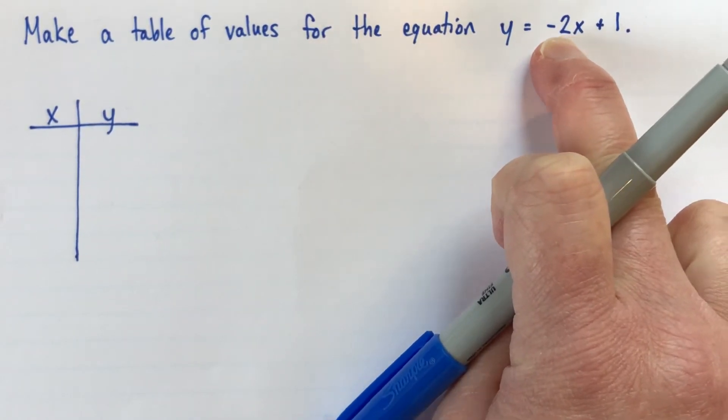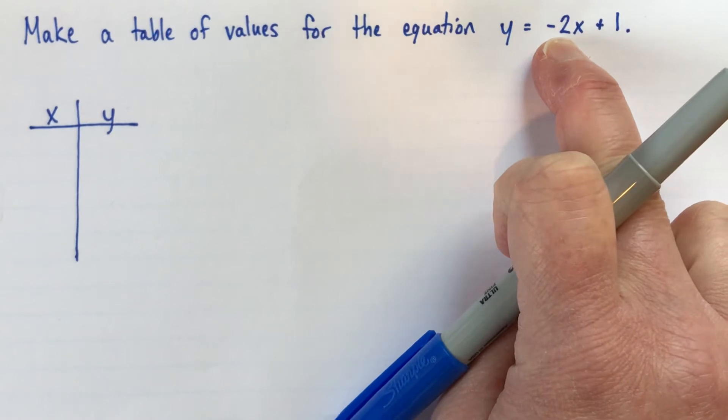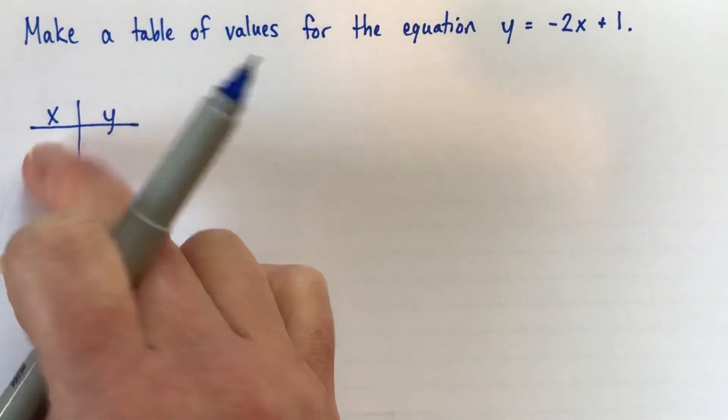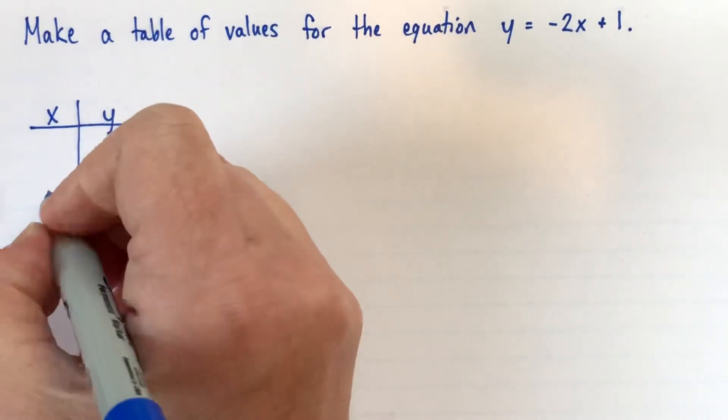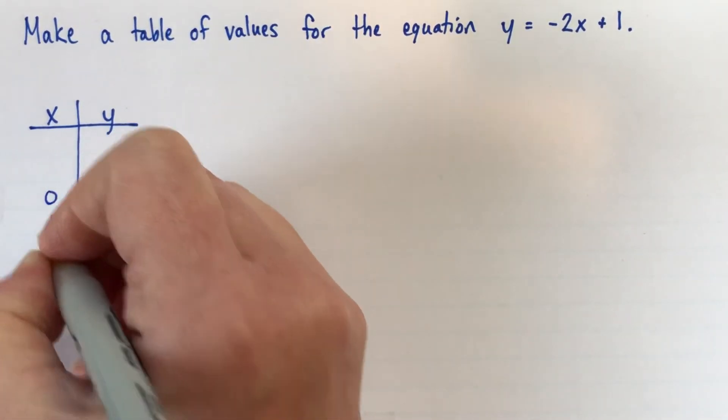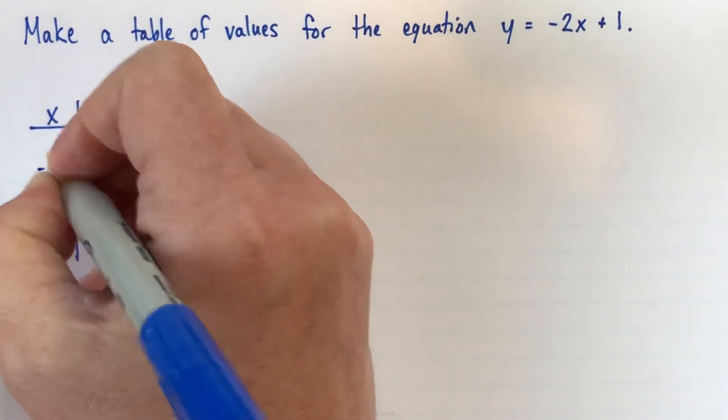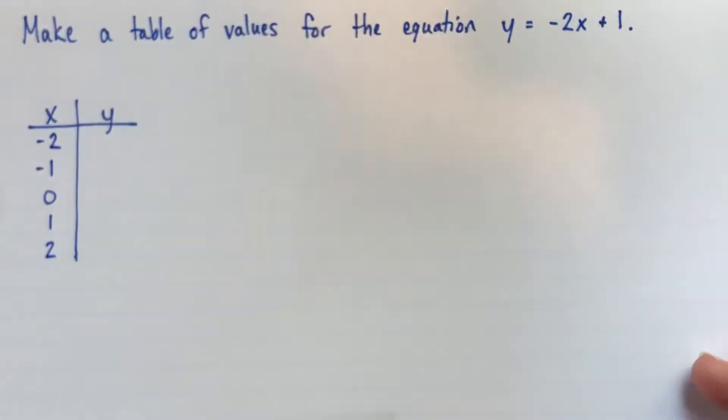I would encourage you to choose 0 as one of them. I think what actually I'd like to do here is I'd like to start with 0 in the middle, and I'll go for two values to the left of 0 in the negatives, and two values to the right of 0. So we'll go 0, 1, 2, and also negative 1 and negative 2.